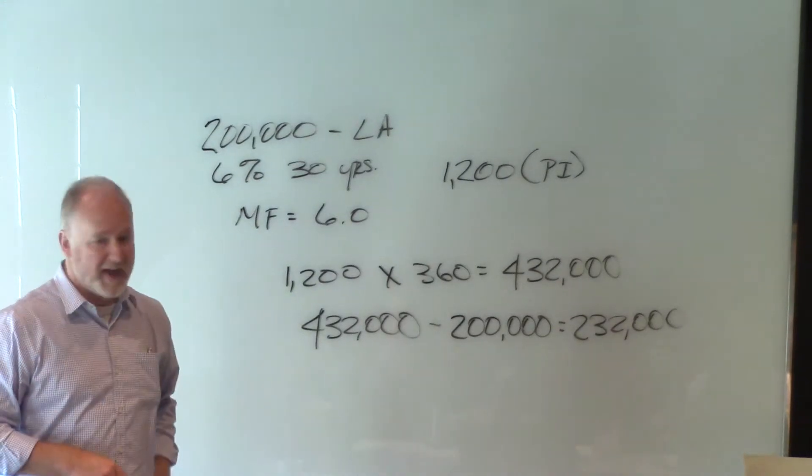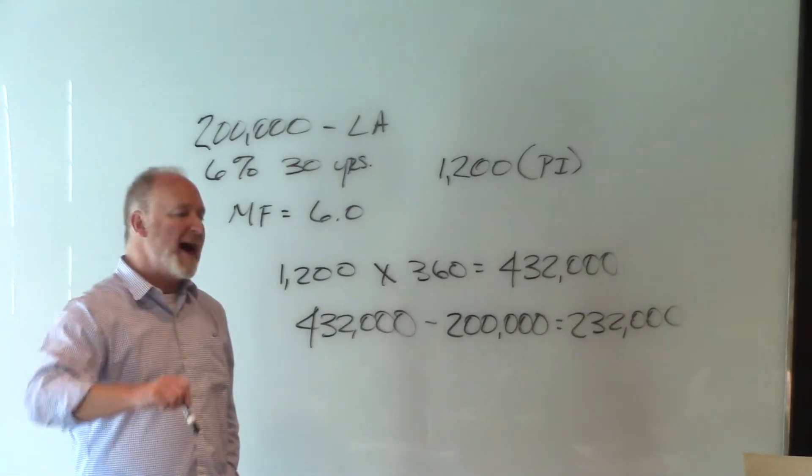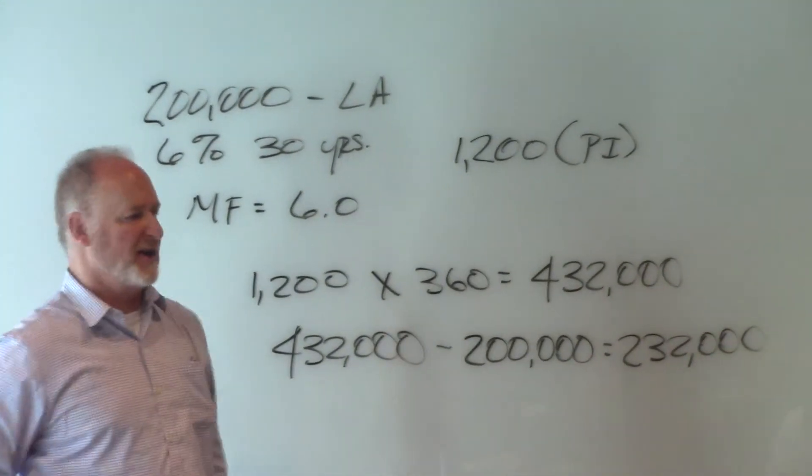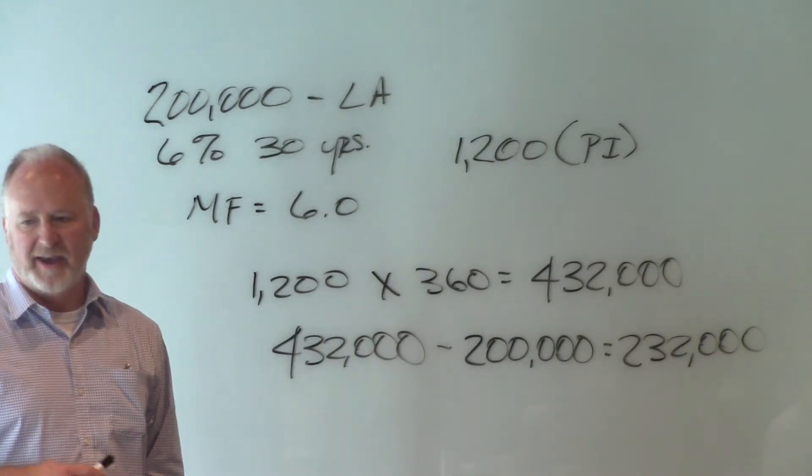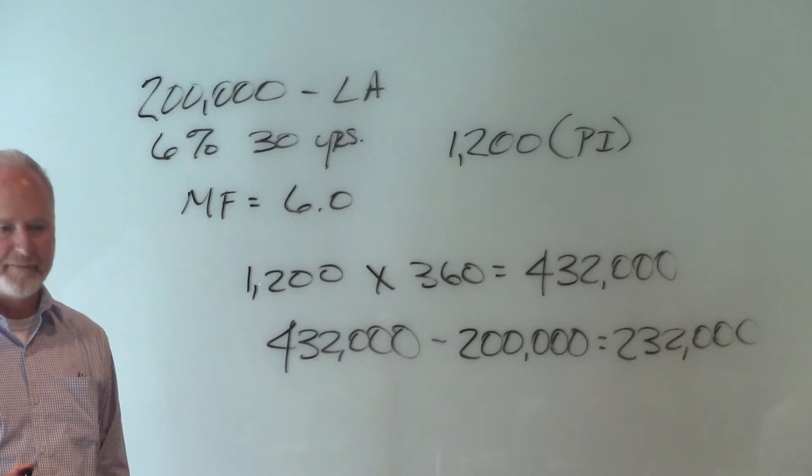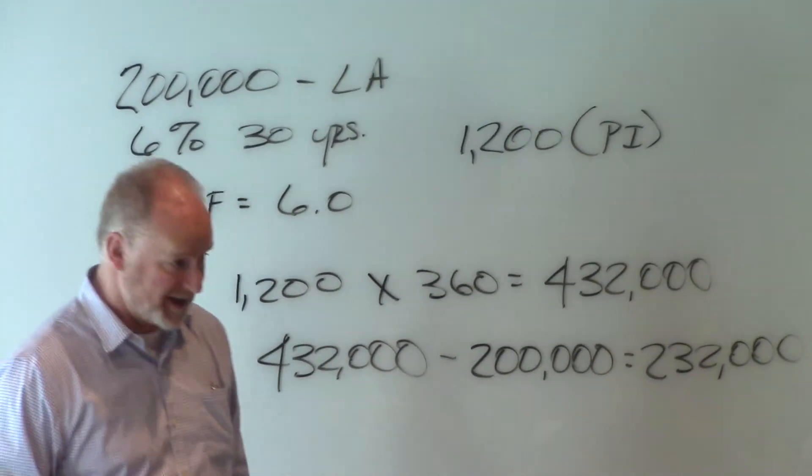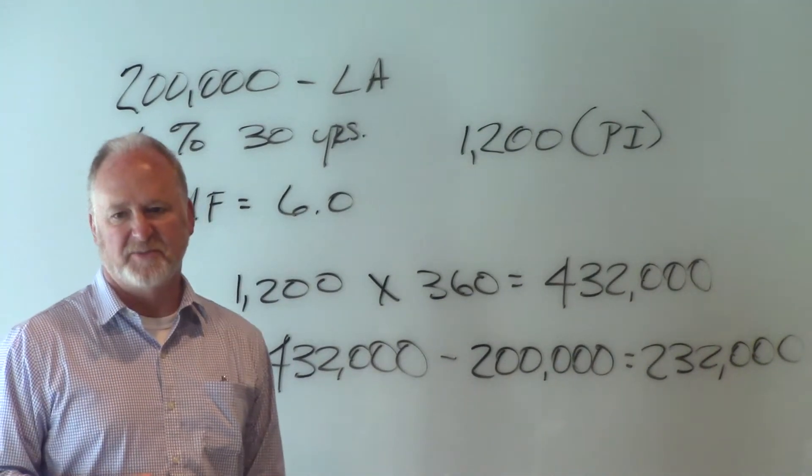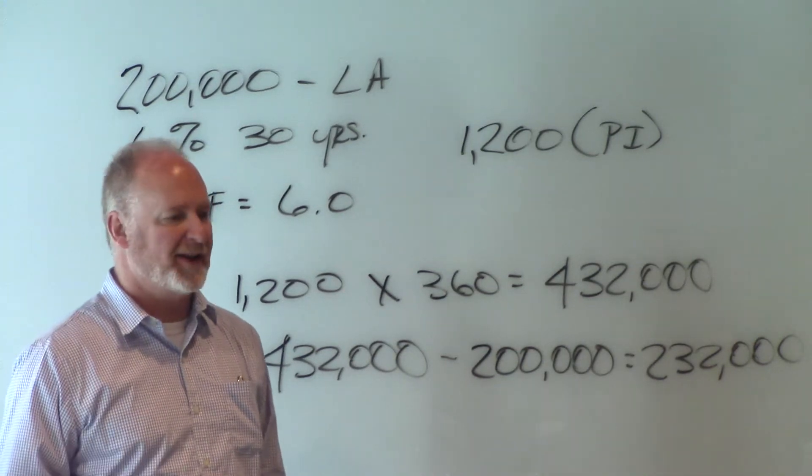You borrowed $200,000. So you paid more back in interest on a 6% loan than you did in principal. More in interest than you did in principal. Okay, what do you think about that? Ouch. And that's why all these schemes are very important. If there's a way that you can figure out to pay it quickly.